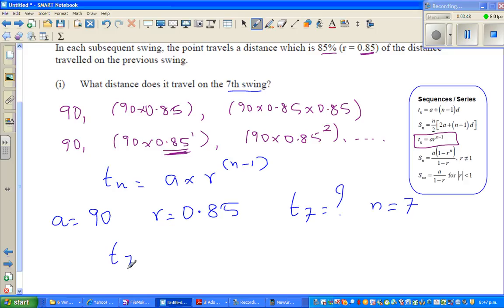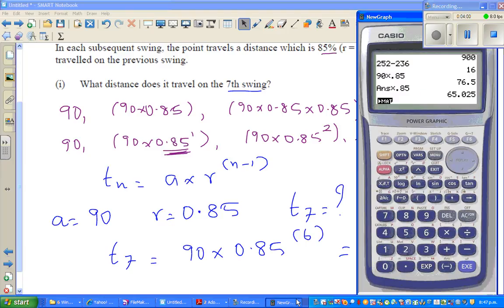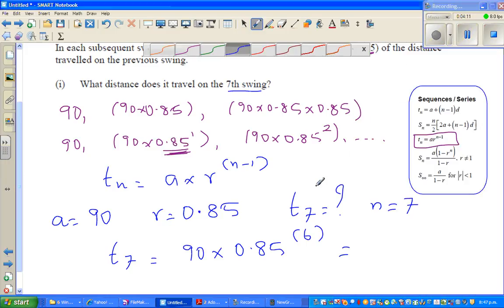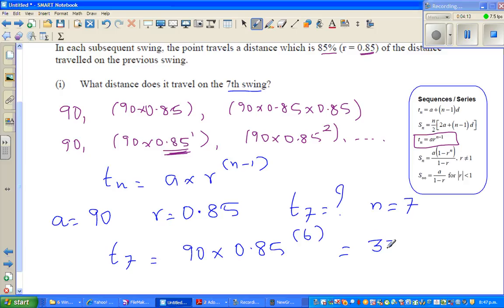T7 is 90 times 0.85 to the power 7 minus 1, which is 6. Use a calculator: 90 times 0.85 to the power 6, which is 33.9 centimeters in the seventh swing, to one decimal place.